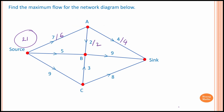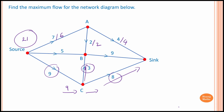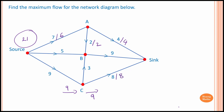Now we focus on vertex C. We can see 8 units flow to the sink from C, and 3 units flow to B as well — so 8 plus 3 is 11 units flowing out of C. But only 9 units flow into C, and outflow cannot be greater than inflow, so the maximum is 9 units flowing out of C. Since we want the maximum units flowing into the sink, we want 8 going there, leaving 1 unit flowing to B. So 9 units flow into C.